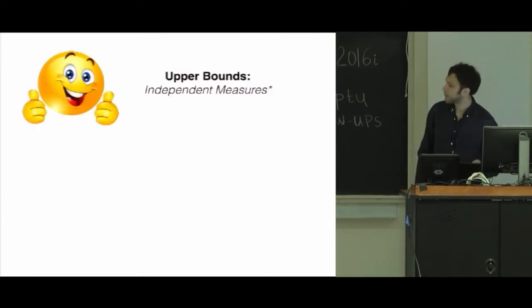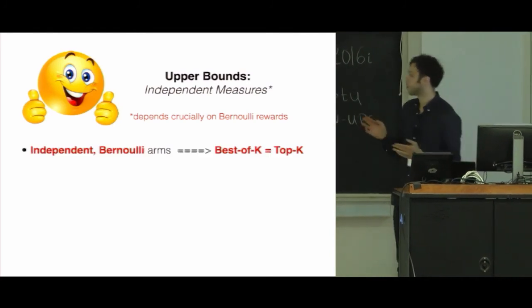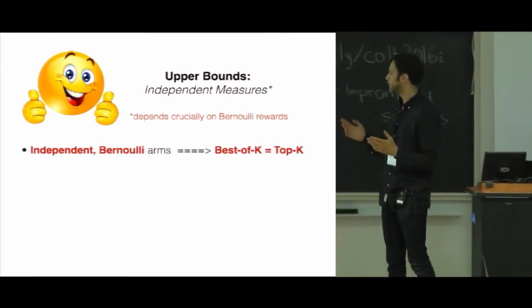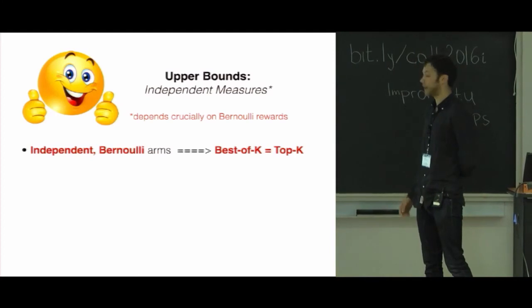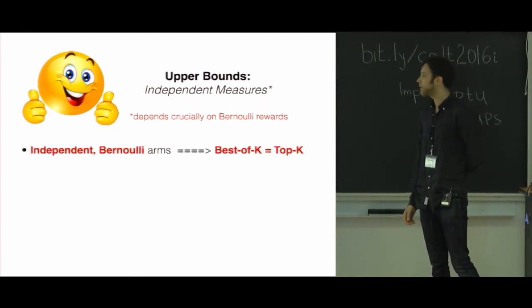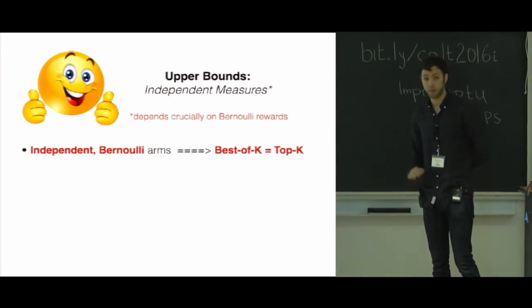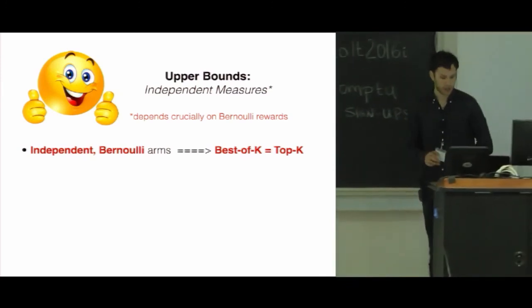Finally, we consider we had some upper bounds for independent measures. These rely crucially on Bernoulli rewards. In this case, independent Bernoulli arms. For independent Bernoulli arms, the best of K is precisely the top K. Turns out if the arms are independent but not Bernoulli, that's completely wrong. So we need this Bernoulli property.